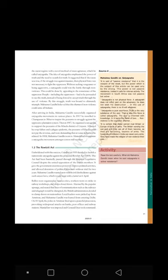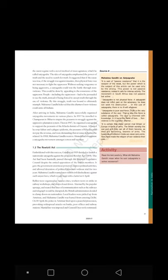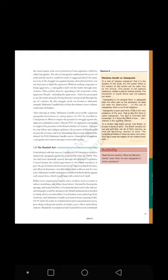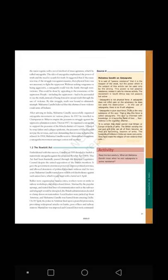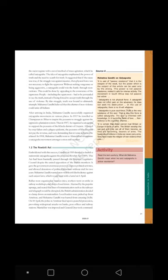'It is true that India cannot rival Britain or Europe in force of arms. The hundreds of millions in India can never carry arms; they have made the religion of non-violence their own.' After arriving in India, Mahatma Gandhi successfully organized Satyagraha movements in various places. In 1917, he traveled to Champaran in Bihar to inspire the peasants to struggle against the oppressive plantation system. Then in 1917, he organized Satyagraha to support the peasants of the Kheda district of Gujarat affected by crop failure. In 1918, Mahatma Gandhi went to Ahmedabad to organize a Satyagraha movement among the cotton mill workers.